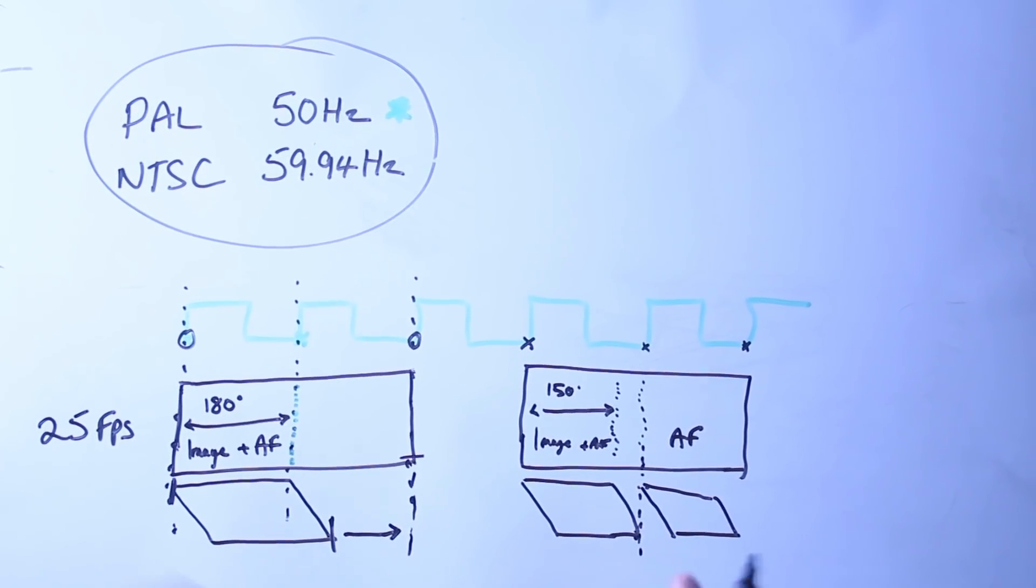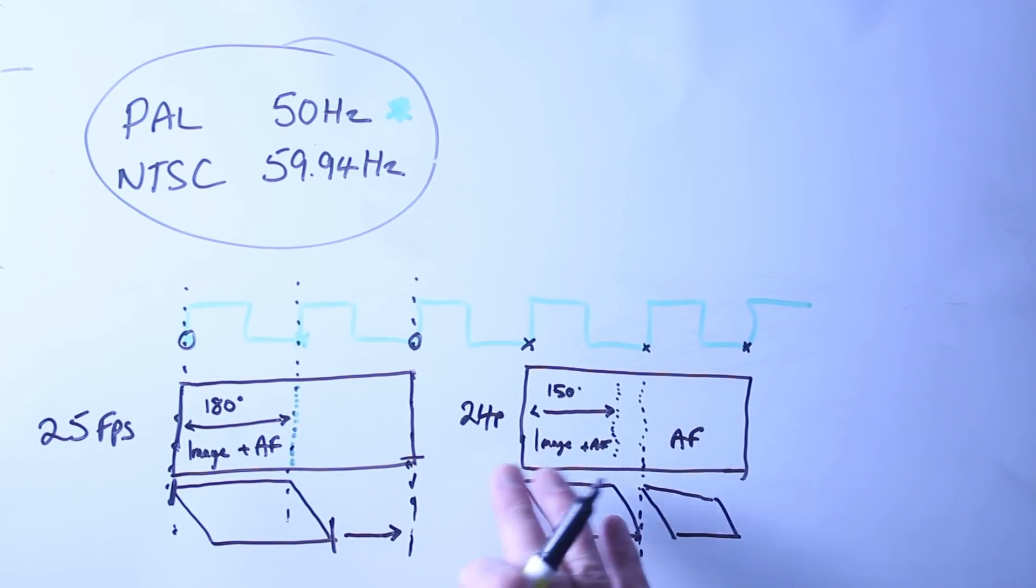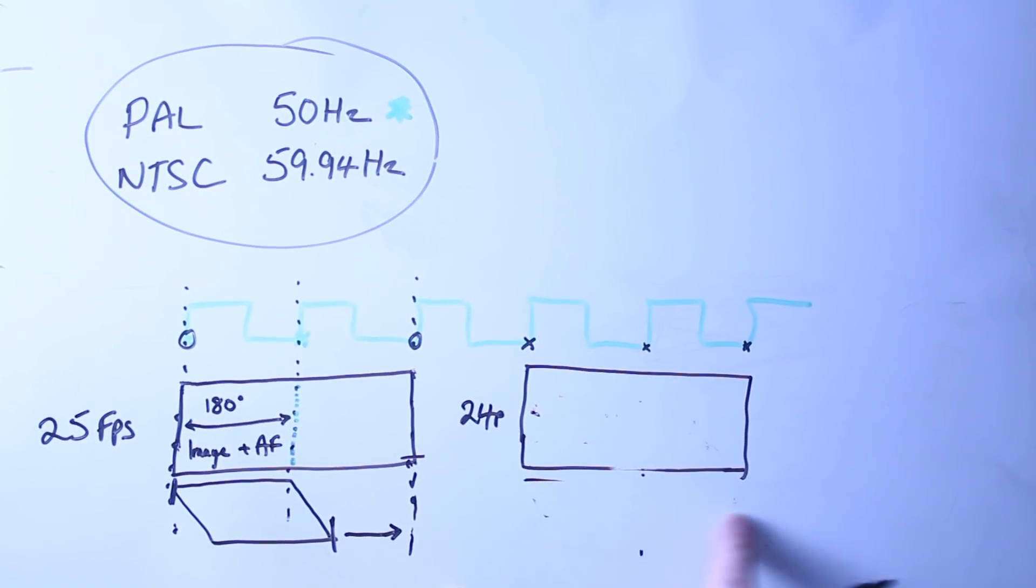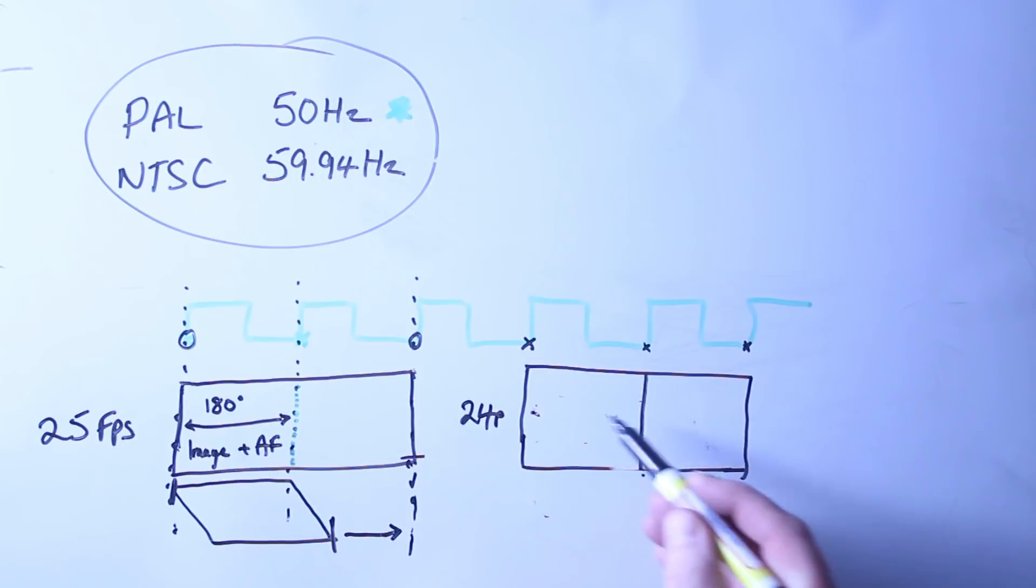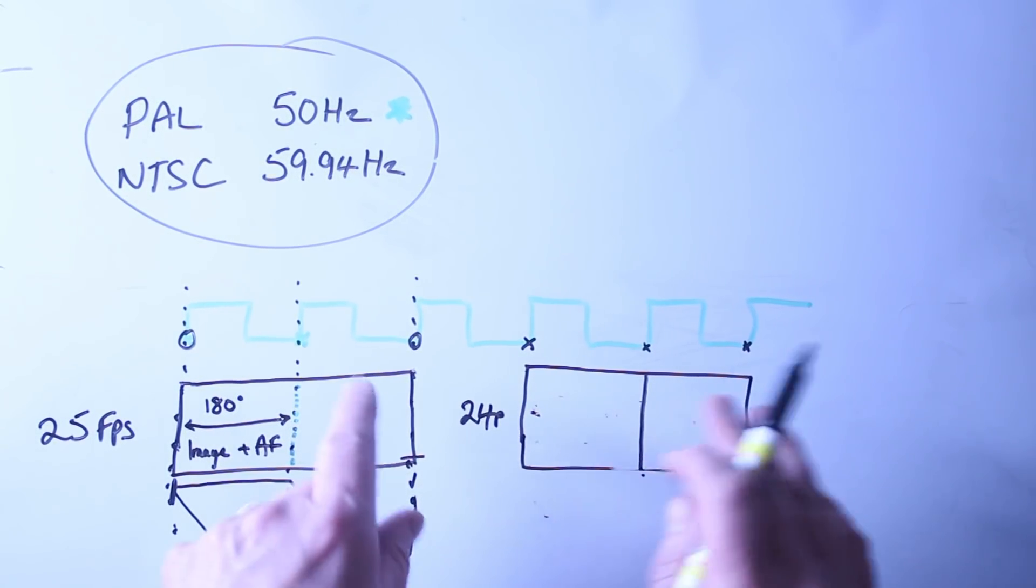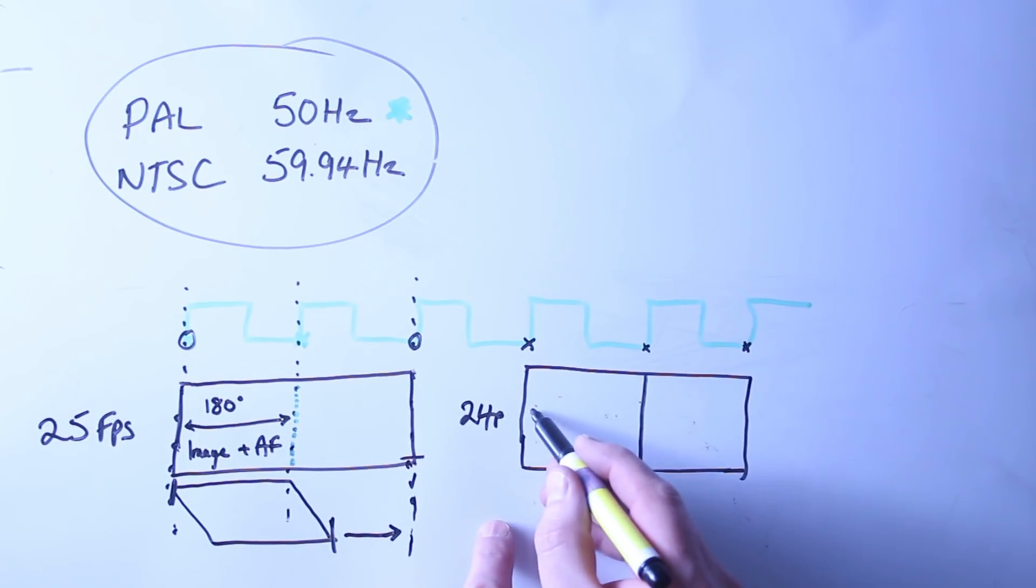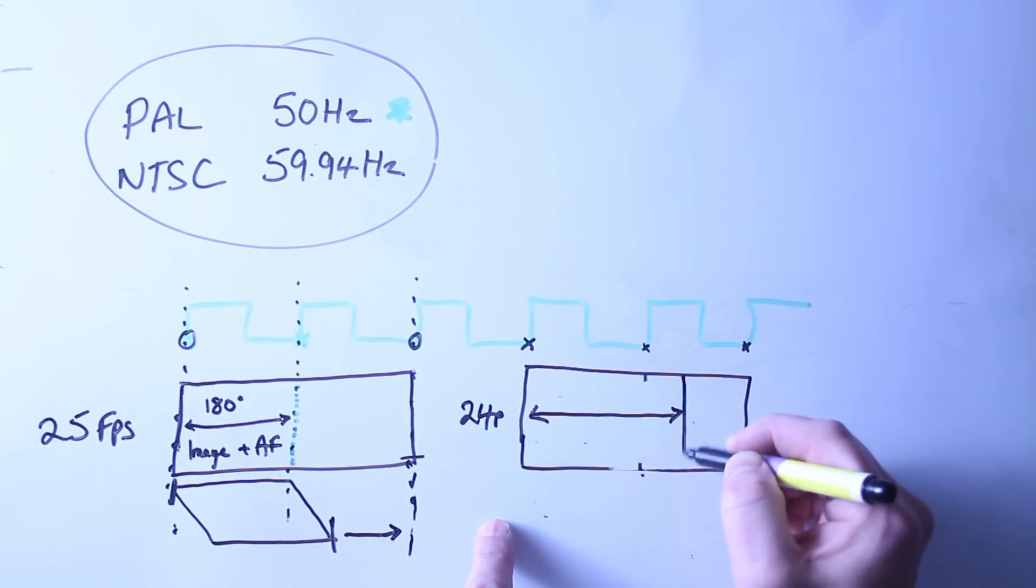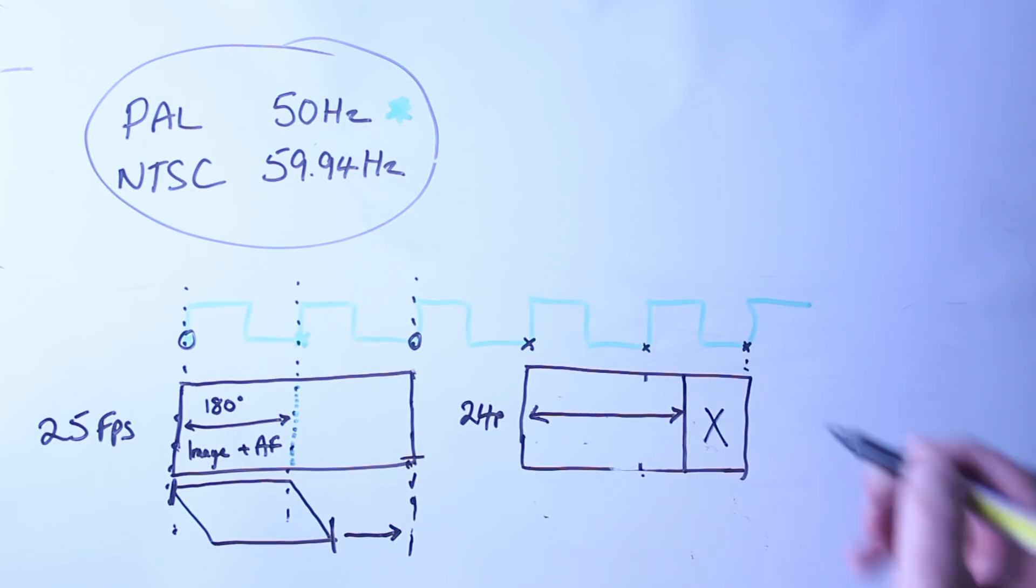This is why at 180 degrees we're getting one scan per frame which does autofocus and image. When we reduce our shutter angle, and it can literally be down by one degree, we're actually getting enough time for the image acquisition as well as an autofocus scan, which helps us no end. The autofocus is keeping up, so we get less hunting and all the other traits of the GH5 are put to bed because we can have a dedicated autofocus scan.